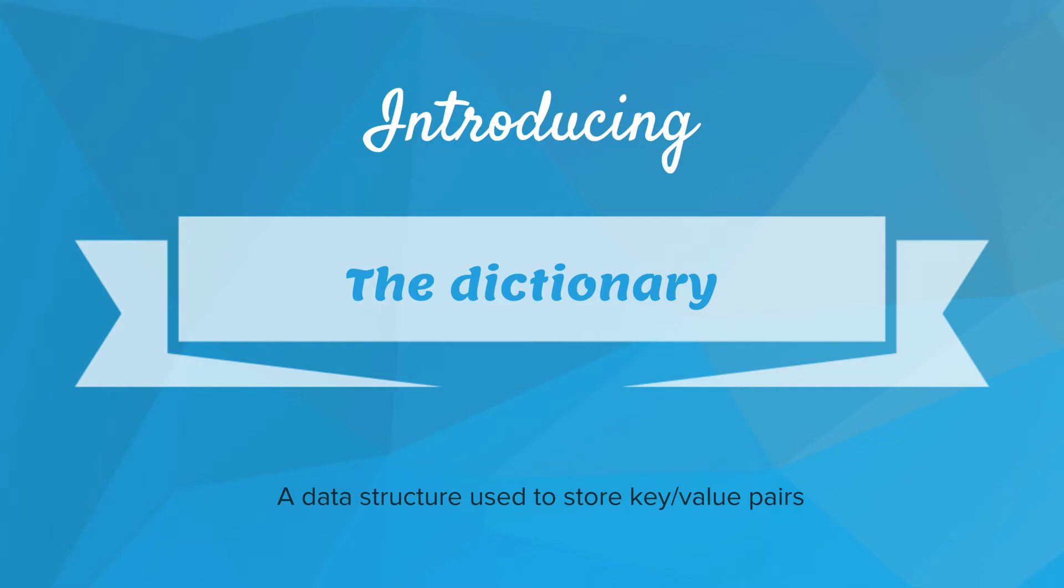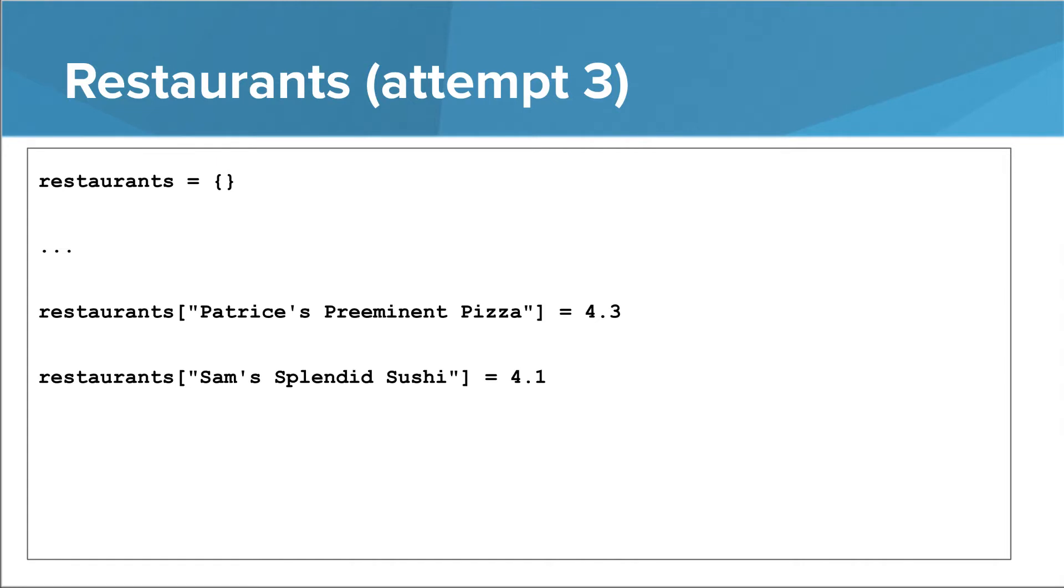A dictionary is a data structure used to store key-value pairs. Let's go back to the restaurant example. In this version, we use a dictionary. We can declare an empty dictionary like this. It is similar to the way we declare an empty list, except it uses curly braces instead of square brackets. We can then insert key-value pairs into our dictionary like this. Note that when inserting things into our dictionary, we use square brackets. This will be true when we retrieve things from our dictionary as well.